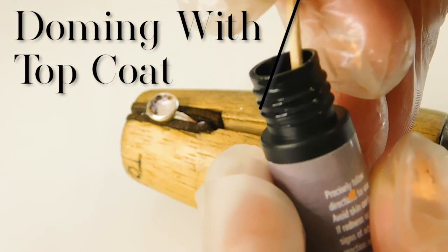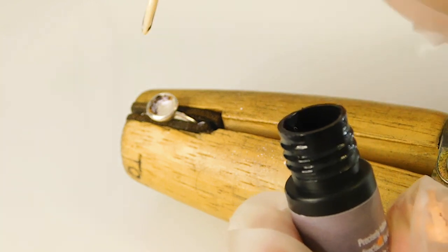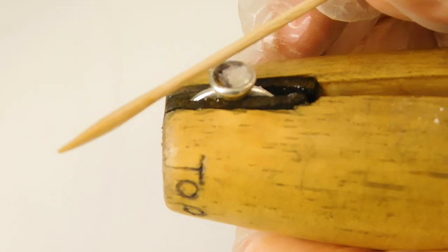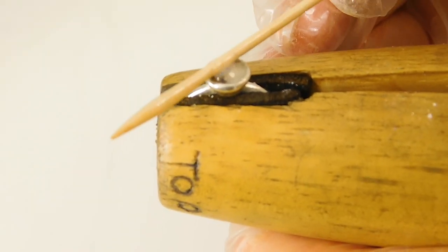Doming with top coat. I find it easiest to pick up a little bit of top coat directly from the bottle and drop it onto the piece. If you add too much, just use the side of the toothpick and roll it around in the resin to pick some up.